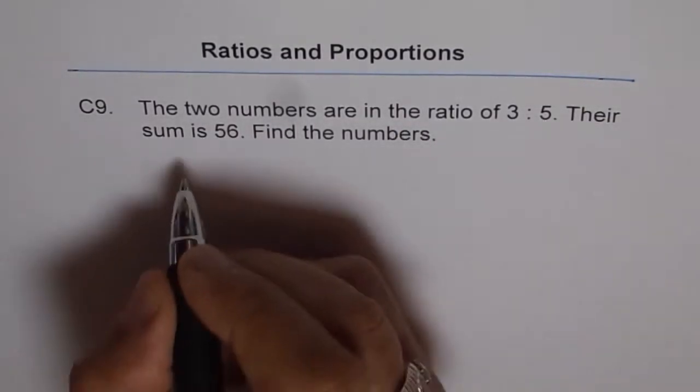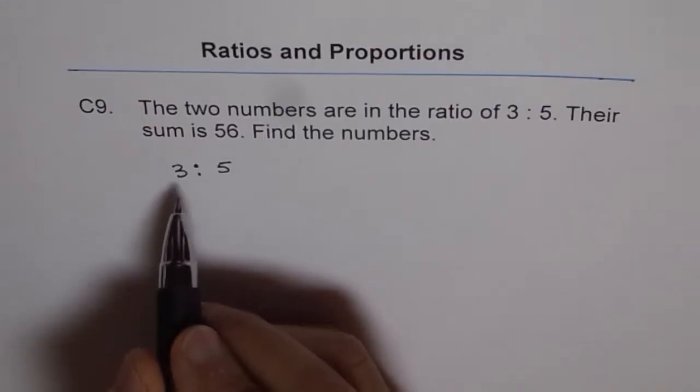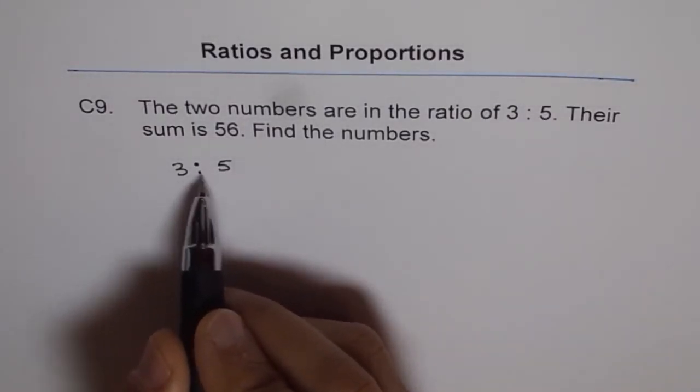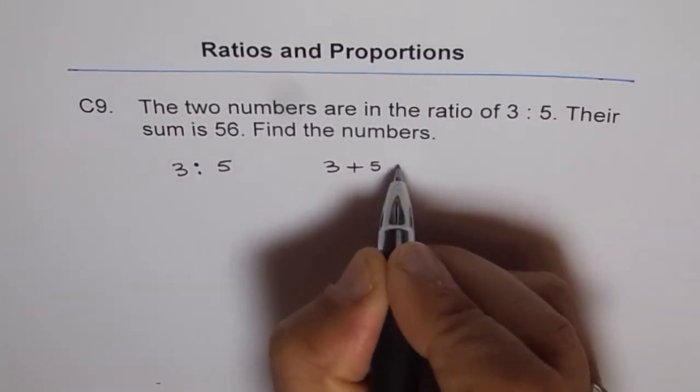So we'll write 3 is to 5 are two numbers. What is the sum of 3 and 5? 3 plus 5 is equal to, we'll do it here, 3 plus 5 is equal to 8.